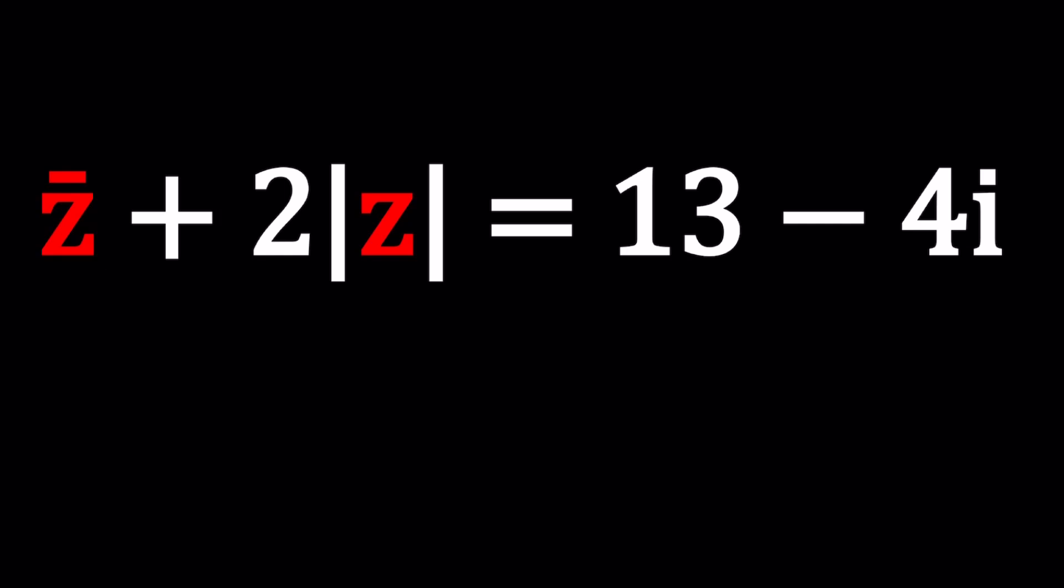I'm going to start by assuming that z is a plus bi. Why? Because it's the name of this channel. Sometimes we use x plus yi especially for locus problems because we're going to graph them on the x y coordinate plane, but a plus bi is a more general approach. If z is a plus bi, a and b are real numbers by the way. Don't forget that, and if you're new to complex numbers make sure to watch the lecture videos that I made.